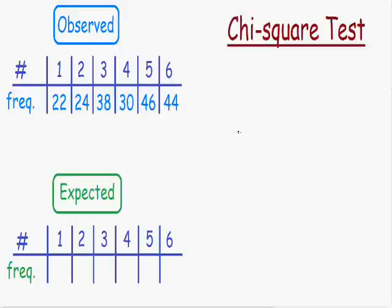Welcome to my video on chi-square testing. In this test we're going to take observed data and we're going to see how good it fits what is expected. That's why this test is also called the goodness of fit test — because we take observed data and test how good it fits what is expected.